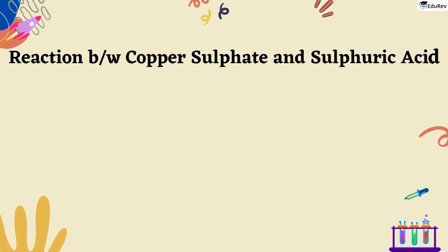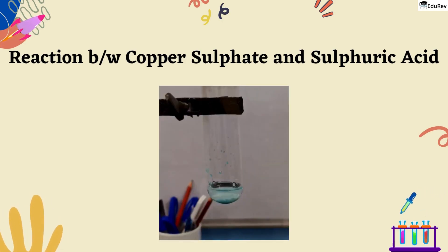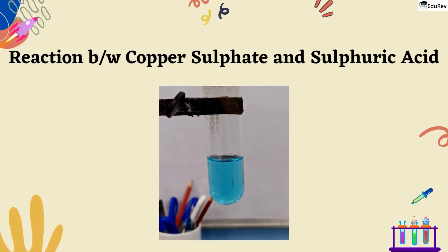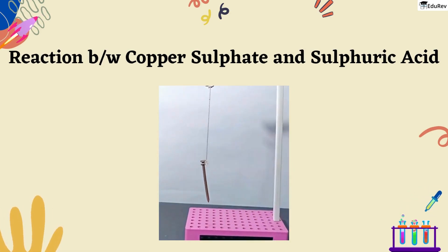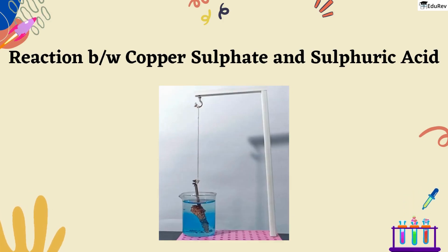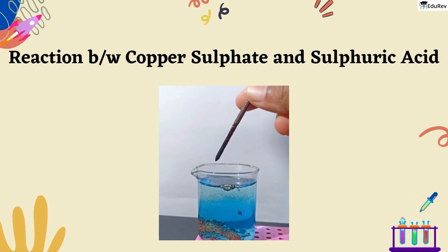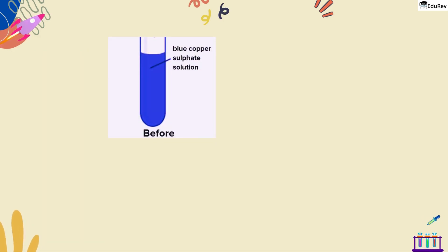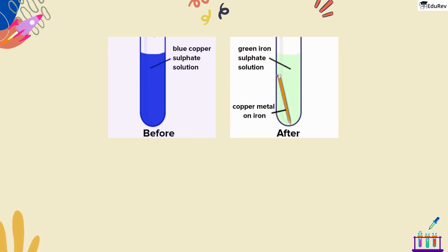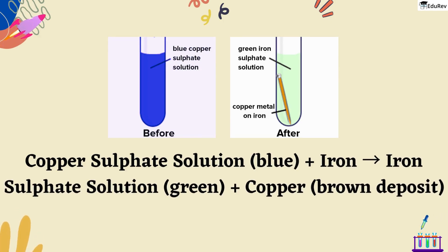Now let's see the reaction between copper sulfate and sulfuric acid. First, we will mix copper sulfate with water and add a few drops of sulfuric acid. Watch as the blue color of the solution changes to a different shade of blue. We will save a small sample of this solution for comparison later. Next, we will put a nail or a shaving blade into the mixture and wait for about 30 minutes. Keep an eye on it because something exciting is happening. Do you see the changes in color and texture? That's the magic of the chemical reaction taking place. Now let's observe the results. The blue solution we saved earlier has remained the same, but the mixture with the nail or blade has changed. The color has turned green and there is a brown deposit on the iron. Copper sulfate solution (blue) + iron gives iron sulfate solution (green) + copper (brown deposit).